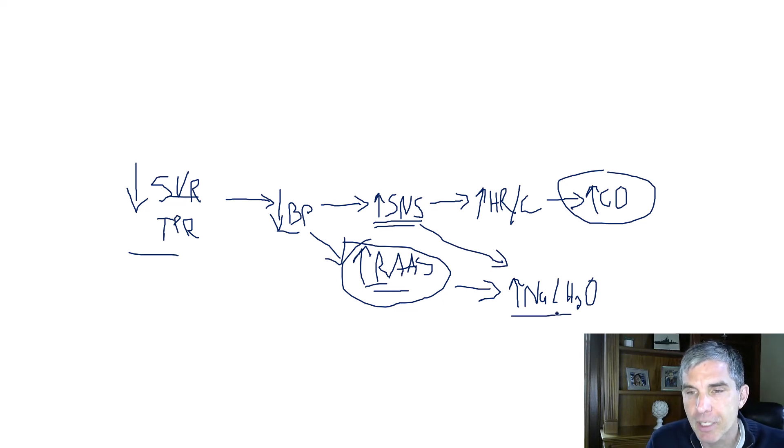And so in patients with cirrhosis, they are total body sodium and total body water overloaded. That's because their kidneys are retaining sodium and water. And this is one of the things that contributes to the ascites that they get in their abdomen.